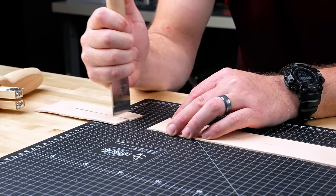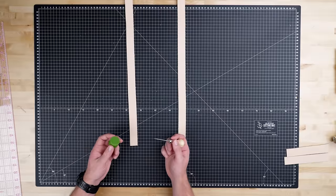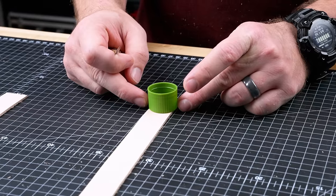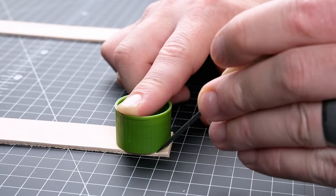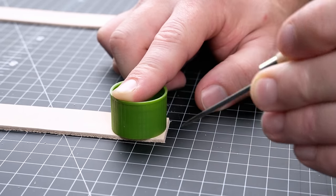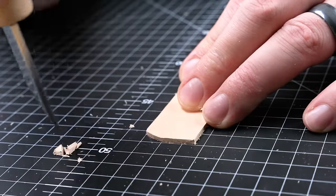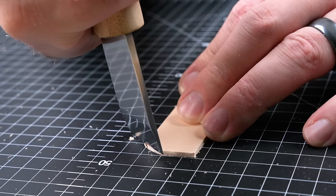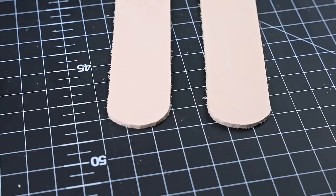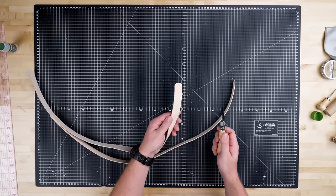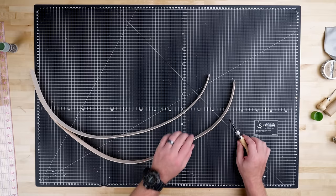Now that our straps are cut out, we want to round the corners. We're gonna use this cap because it fits nicely. You can use whatever you'd like. I'm gonna mark this radius with my scratch-all and then cut it out with the utility knife. Now that we have our straps cut out and our edges rounded, we're gonna repeat the same beveling and burnishing as we did on the top side of the bag.